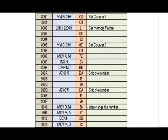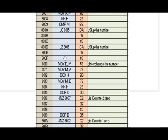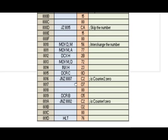This ensures every number is compared with every other number. If the number in A is greater than the number in memory location M, we must interchange them for ascending order. We take M into D, move A to M, decrement the memory pointer, then move D to M. After that, INX H and DCR C are executed.